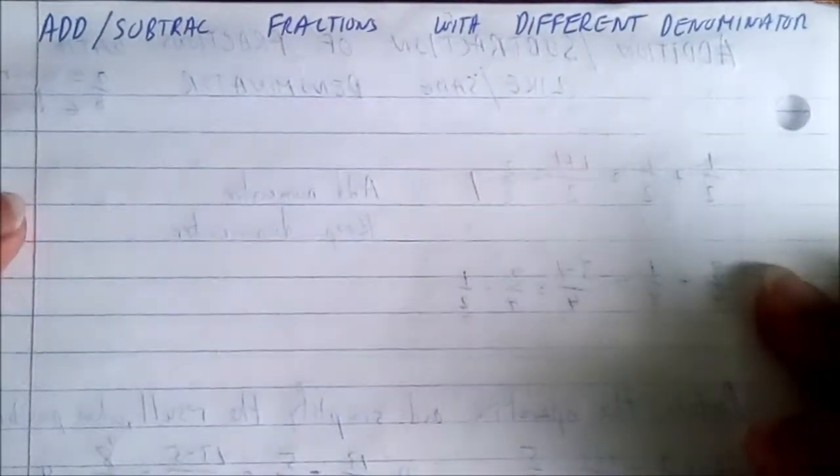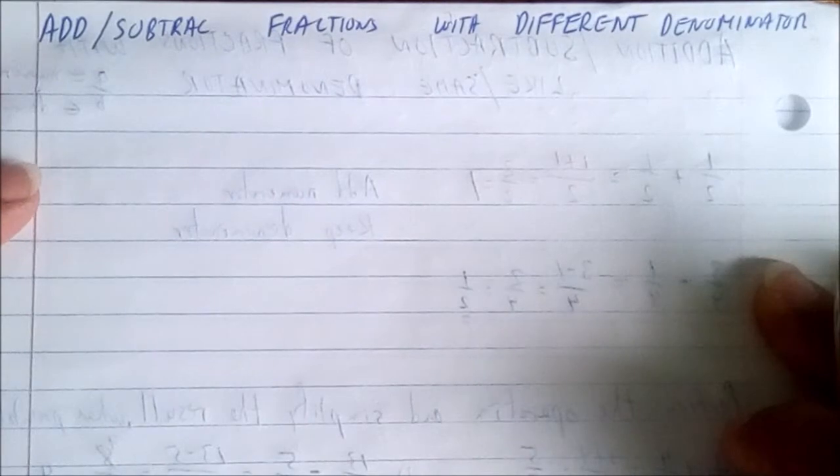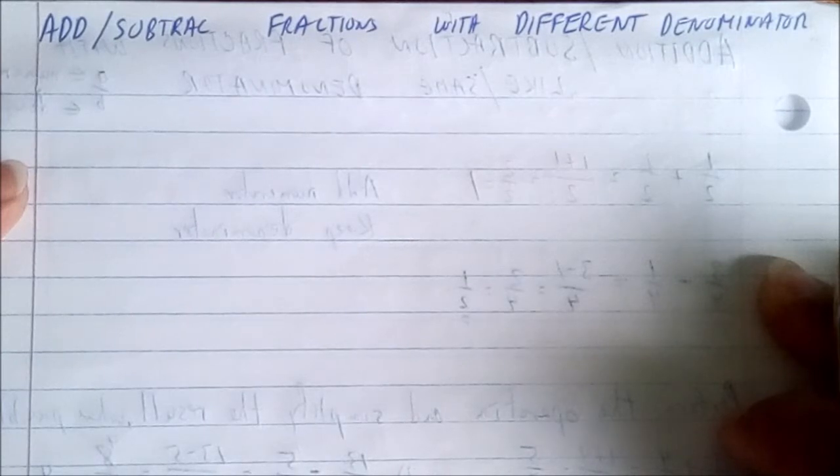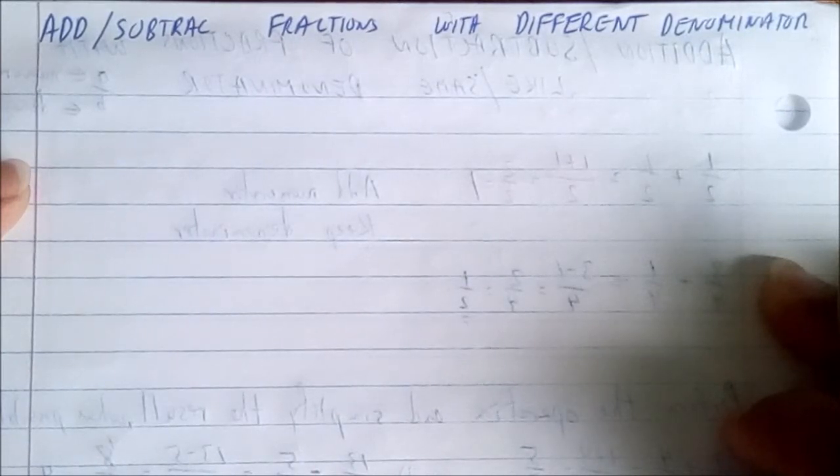When you have fractions that don't have the same denominator and you need to either add or subtract them, the way you're going to be working this out is not that difficult. So let's see why is it that we say that two fractions are different.